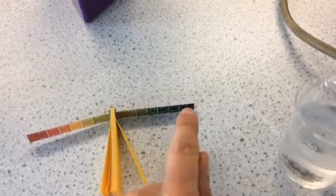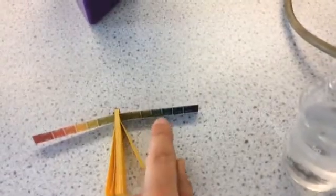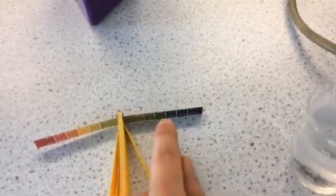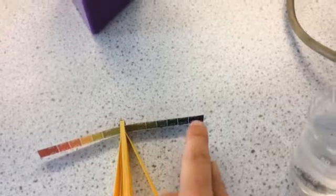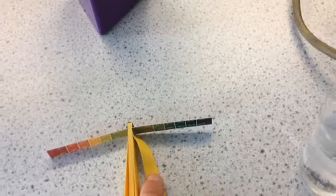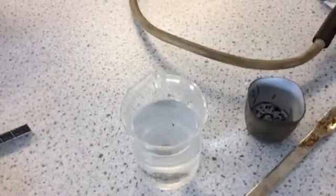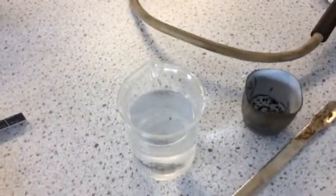And the more alkaline it is, the darker that blue will be until you get the purple, which is the strongest alkali. So depending on what color this yellow strip turns when we put it into here, that will tell us whether it is an acid or an alkali.